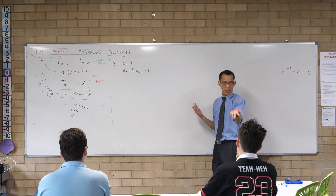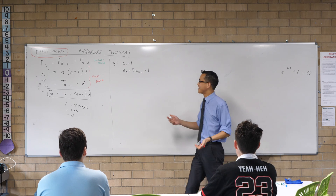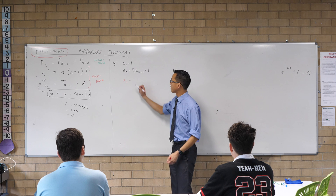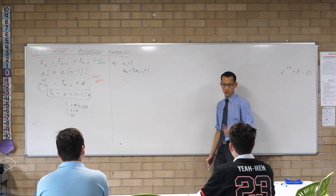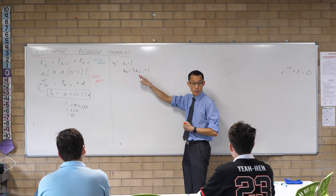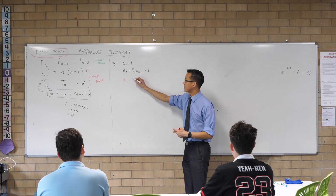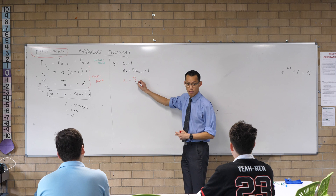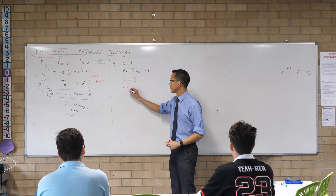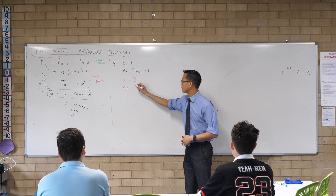So how would we go about guessing what the explicit formula might be? Let's just have a go and see what we get. We already know a1 is 1. Let's work out a2: we double the previous one which gives 2, then add 1, so a2 equals 3. Then a3: double 3 gives 6, add 1 gives 7.